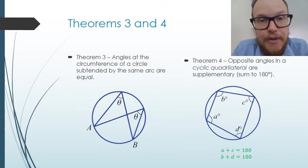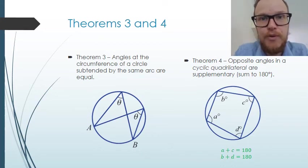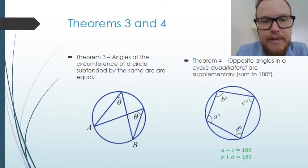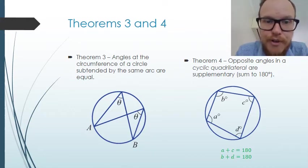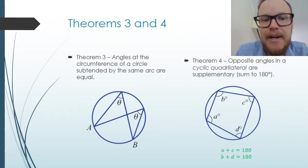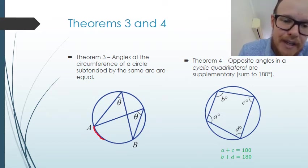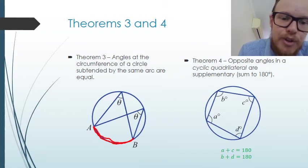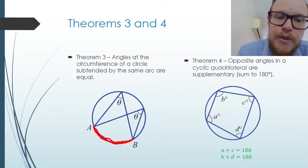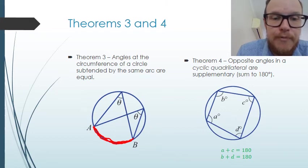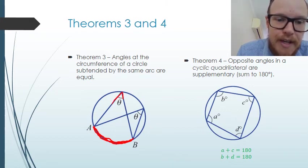Now on to circle theorems three and four. Theorem three states that the angles at the circumference of a circle subtended by the same arc are equal. Here we have arc AB and two angles on the circumference of the circle.